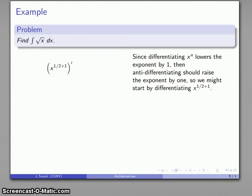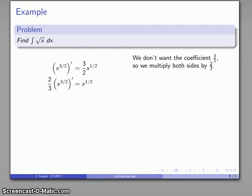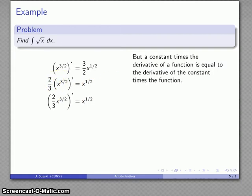The derivative of x^(1/2) raised by 1 — that's x^(3/2) — gives (3/2)x^(1/2). We have our √x but with an extra coefficient of 3/2. Close only counts in horseshoes and calculus, so let's multiply by 2/3 to eliminate that coefficient. On the left-hand side, constant times derivative becomes derivative of constant times function. So the derivative of (2/3)x^(3/2): the exponent 3/2 comes out front, 3/2 times 2/3 cancels, and x^(1/2) is exactly what we're looking for.